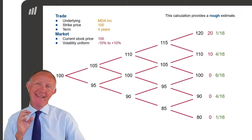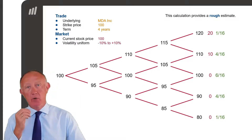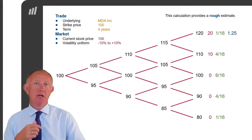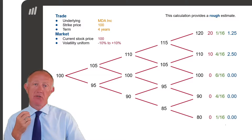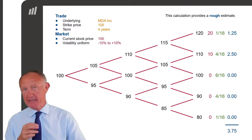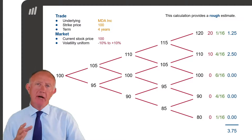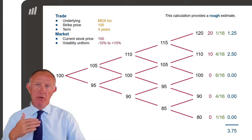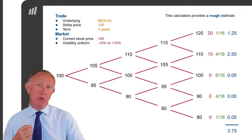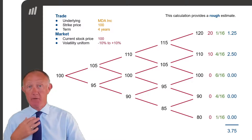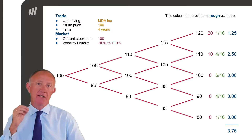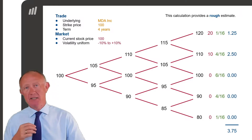Finally, we can work out the expected payoff — how much would we make on average if we owned this option? 1 out of 16 times we make 20, that's worth 1.25. 4 times in 16 we'd make 10, that's worth 2.50. And in every other scenario we make 0, so on average we make 3.75. If we were buying this option, we'd want to make sure we bought it for less than 3.75. If we sold this option, the person we sold it to would on average make 3.75 from us, so we want our ask price to be higher than 3.75 and our bid a little bit lower than 3.75.